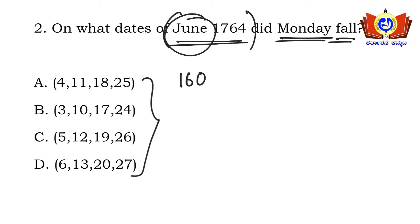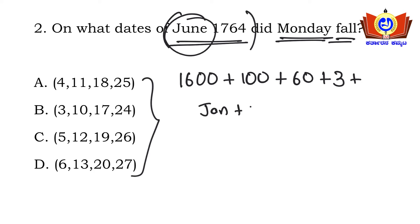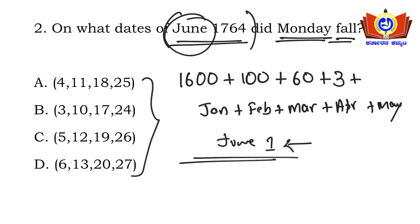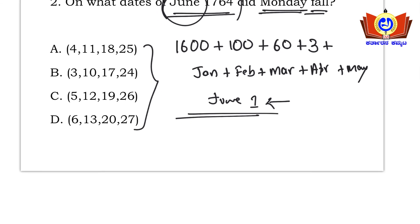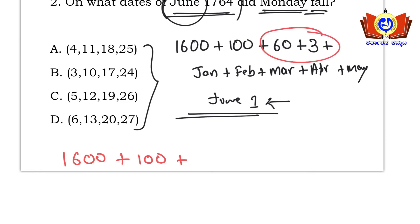We split 1764 as 1600 + 100 + 1760, then plus 3 years giving 1763. We will calculate which day June 1st falls on, then determine how many Mondays there are. For 63 years, divide by 4: that gives 15 leap years and 48 ordinary years.